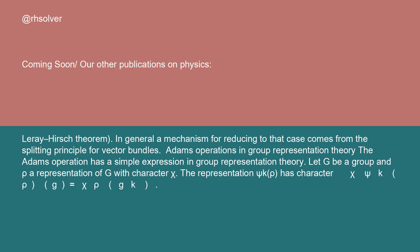Adams operations in group representation theory: the Adams operation has a simple expression in group representation theory. Let G be a group and ρ a representation of G with character χ. The representation Ψᵏ(ρ) has character given by χ(Ψᵏ(ρ))(g) = χ(ρ)(gᵏ).